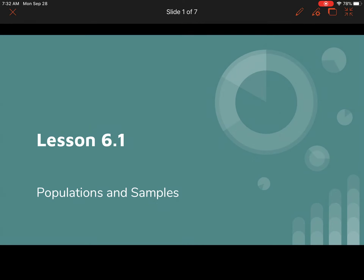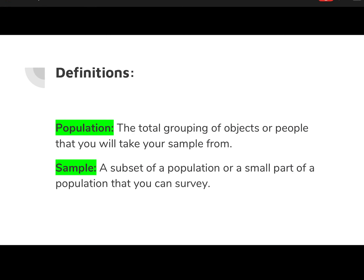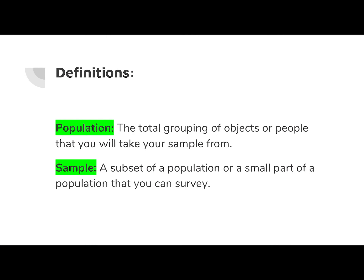Hi class. Right now we're going to be going over Lesson 6.1, Populations and Samples. For starters, we've got some definitions here. The definition of a population is the total grouping of objects or people that you will take your sample from.